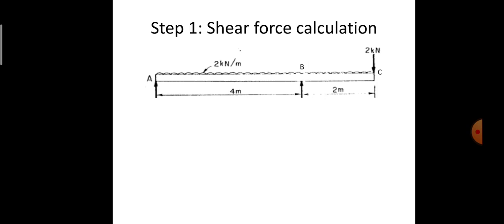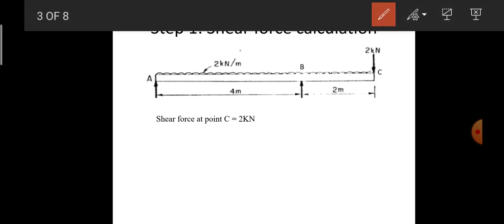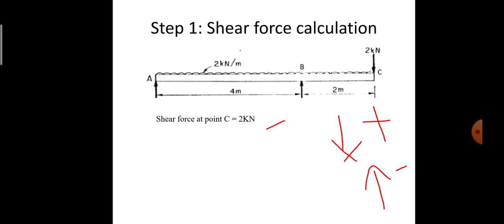After finding the reactions, the next step is to find the shear force at individual points. Starting from point C: for shear force we consider forces acting at that point and all previous points. Since C is the starting point, only the load at C is considered. Using the right-hand sign convention — downward forces are positive — the 2 kN load at C is downward, so shear force at C = +2 kN.